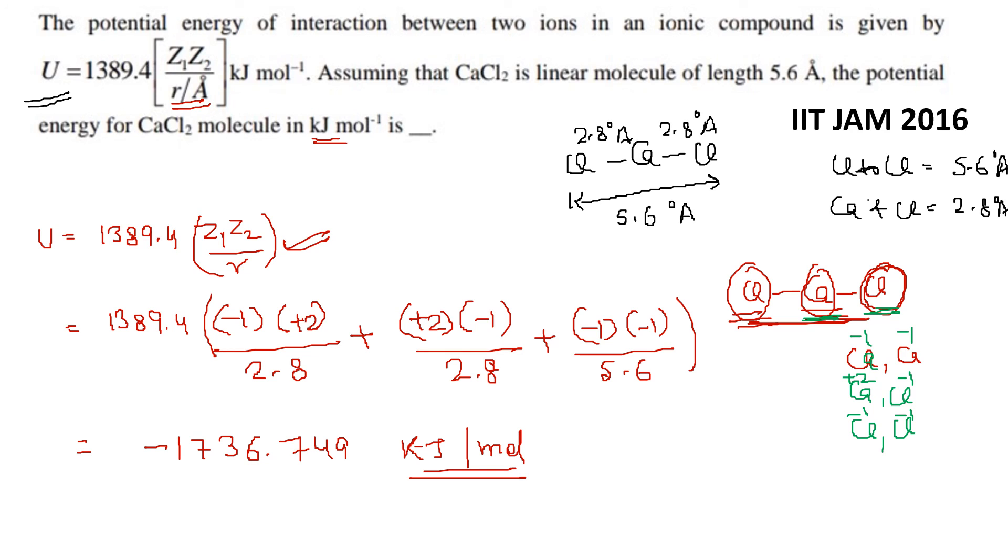First one is calcium and chloride, so here we will solve this one and put the value here. We have to calculate the distance between them, and then we have to calculate the potential energy. This is a good question from IIT JAM 2016.